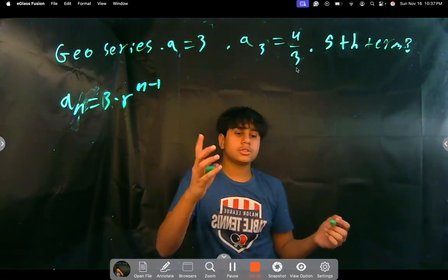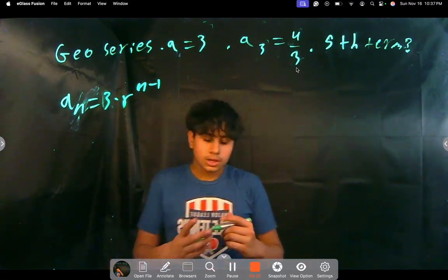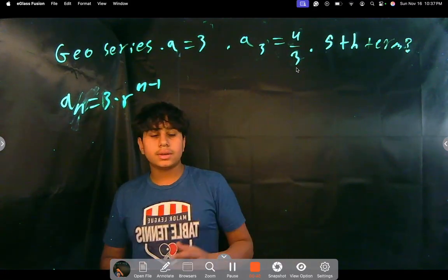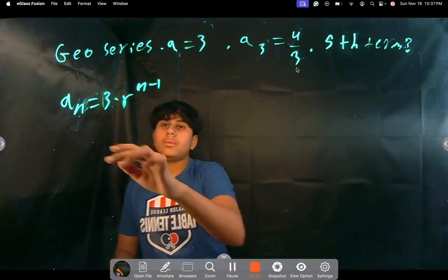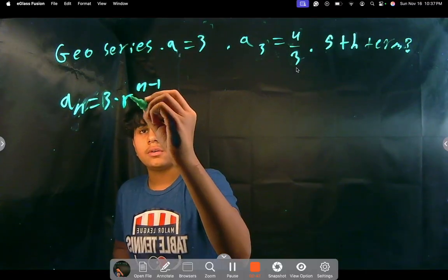And we have to first start by substituting in a of 3 so that we can then find out the other values because we need to still find r. But with our information with a of 3, we can find it out, alright?